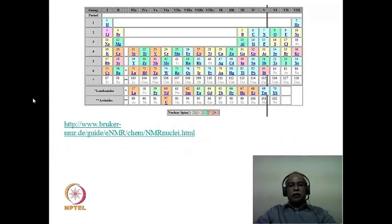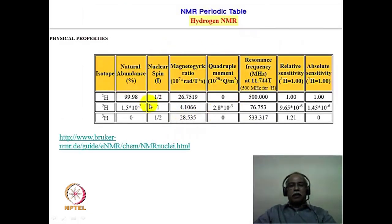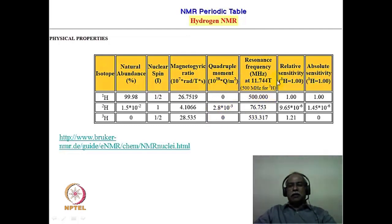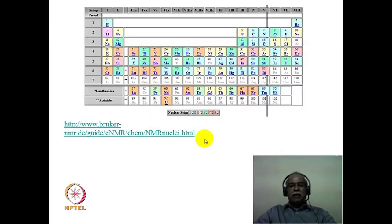Another website, by the company Bruker, which manufactures NMR spectrometers, also features an interactive periodic table. If you click on any particular element, a screen pops up with NMR-relevant information — all magnetically active isotopes, their natural abundance (zero for synthetic isotopes), the nuclear spin, the gyromagnetic ratio, the quadrupole moment if applicable, the resonance frequency referenced to proton at 500 megahertz, and sensitivity referenced to proton. This allows one to identify the NMR properties of elements across the periodic table.